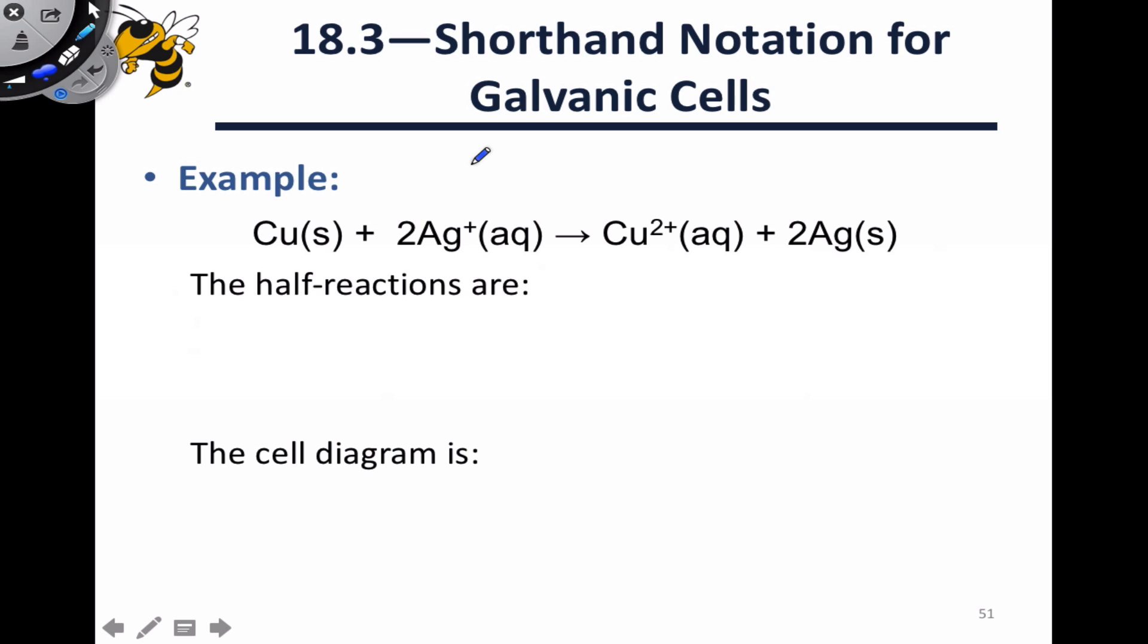We can also write cell notation not from an image of a galvanic cell, but from a chemical equation for the redox reaction that occurs within the cell. A nice way to do this involves, first of all, identifying the half reactions that are going on, and specifically identifying which is an oxidation and which a reduction. So what we can see here is that copper solid is going to Cu2+ aqueous ions, and two electrons will be released, while on the reduction side we have two Ag+ ions in aqueous solution, combining with two electrons to form two moles of Ag solid.